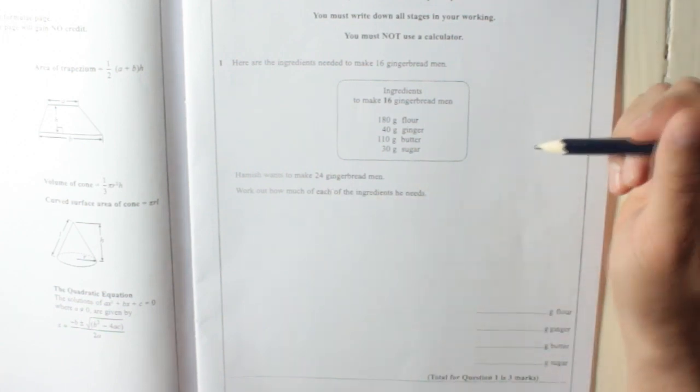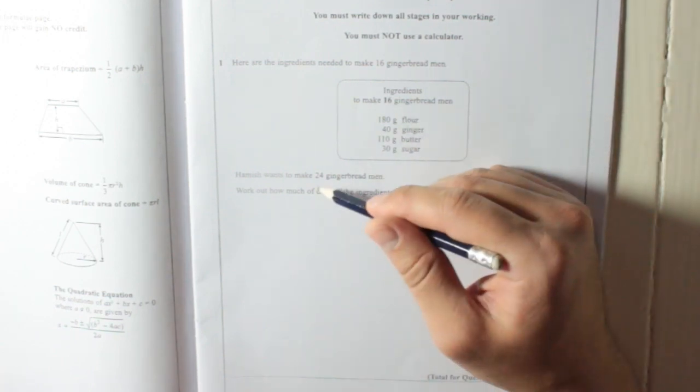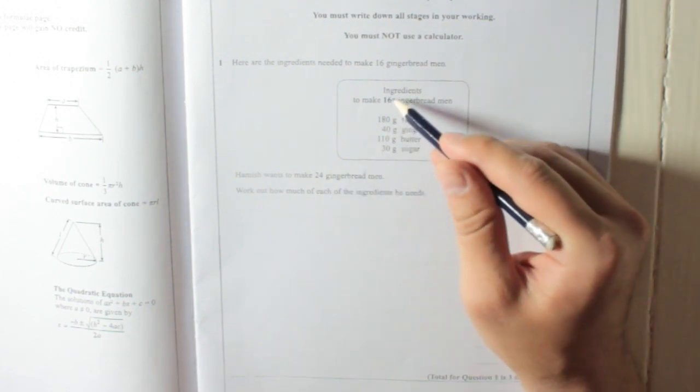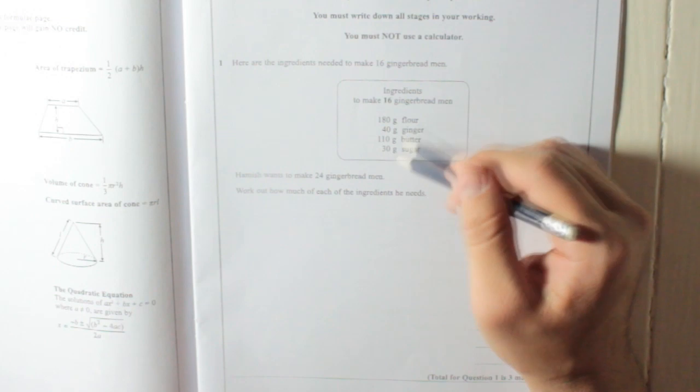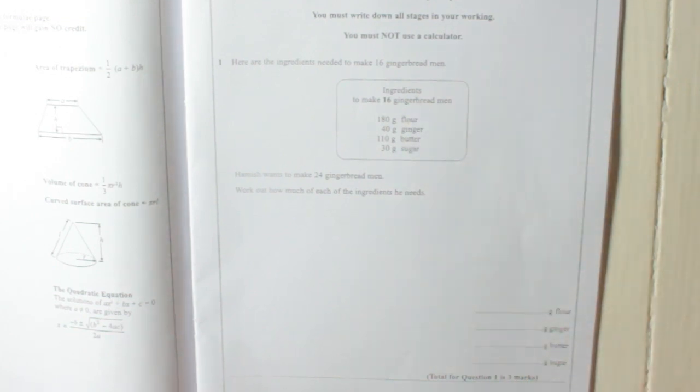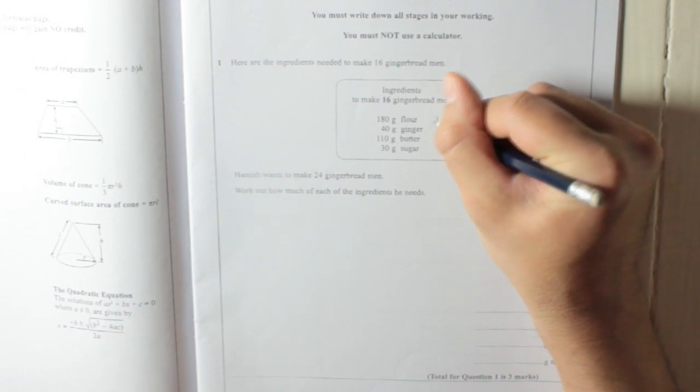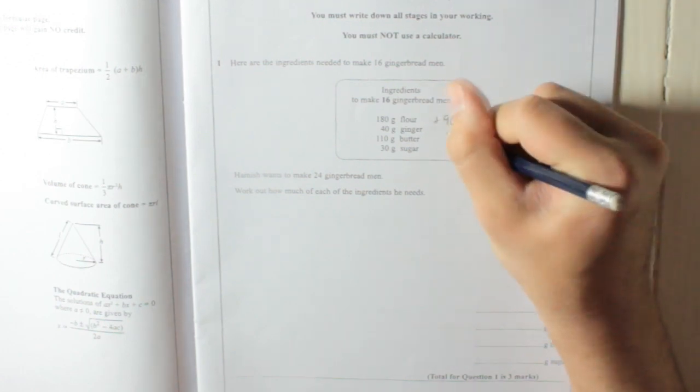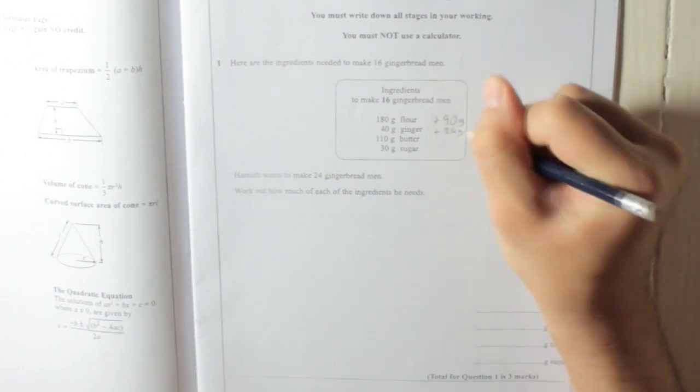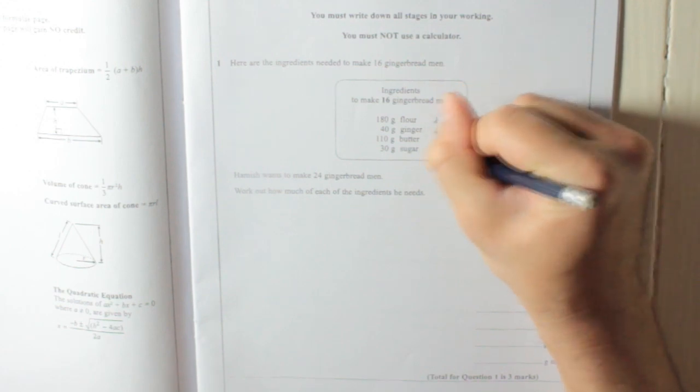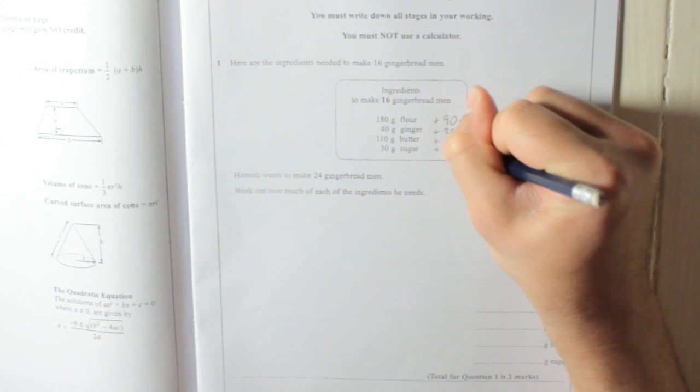Well, the difference between 16 and 24 is 8, so 8 is half of 16. So he needs all of this, plus half extra for each one. So, it's going to be 180 grams plus 90 grams, 40 grams plus 20 grams, 110 grams plus 55 grams, and 30 grams plus 15 grams.